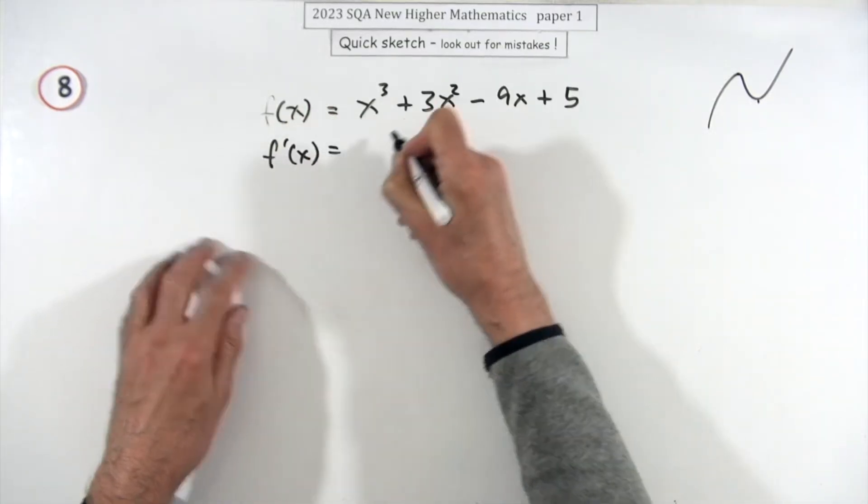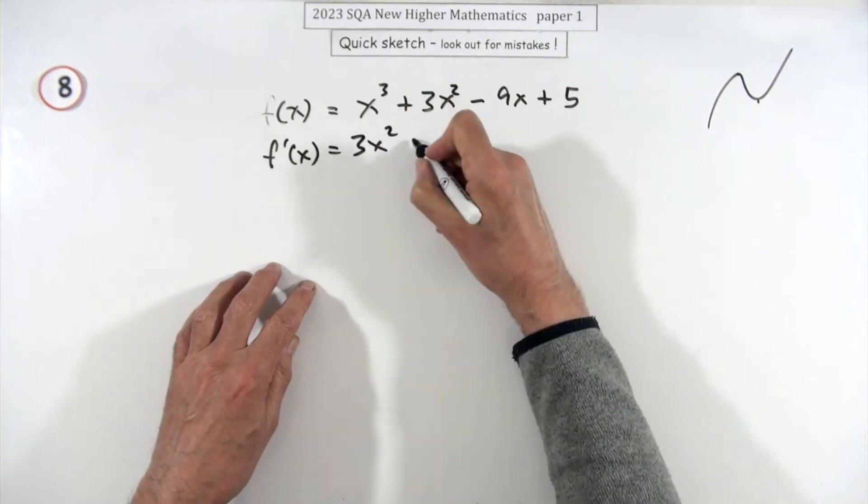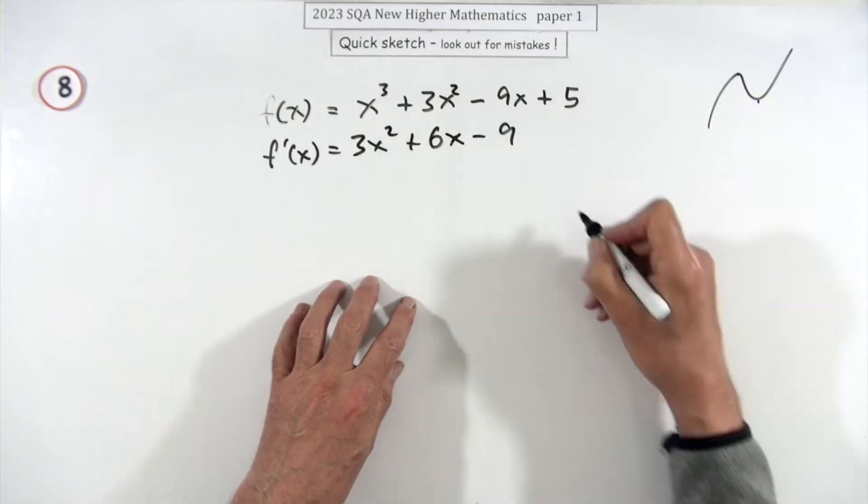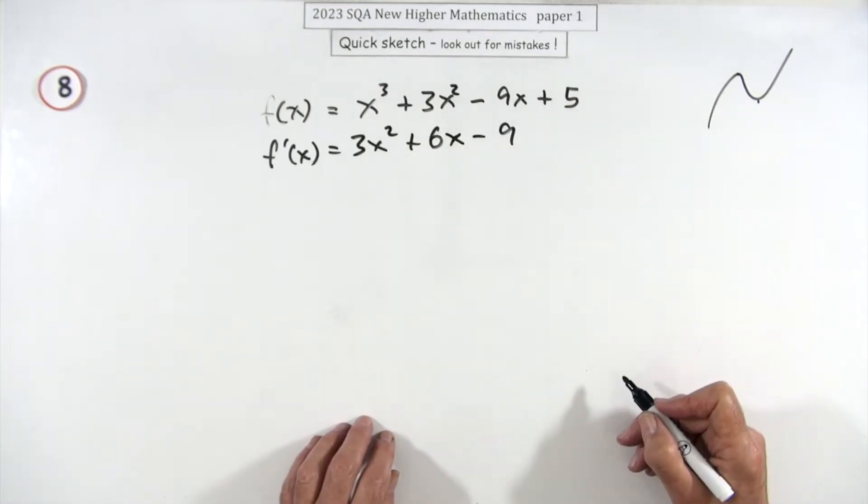So differentiate it: multiply by the power, take one off the power, multiply by the power, take one off the power, and the coefficient doesn't change, so that goes. f'(x) = 3x² + 6x - 9.